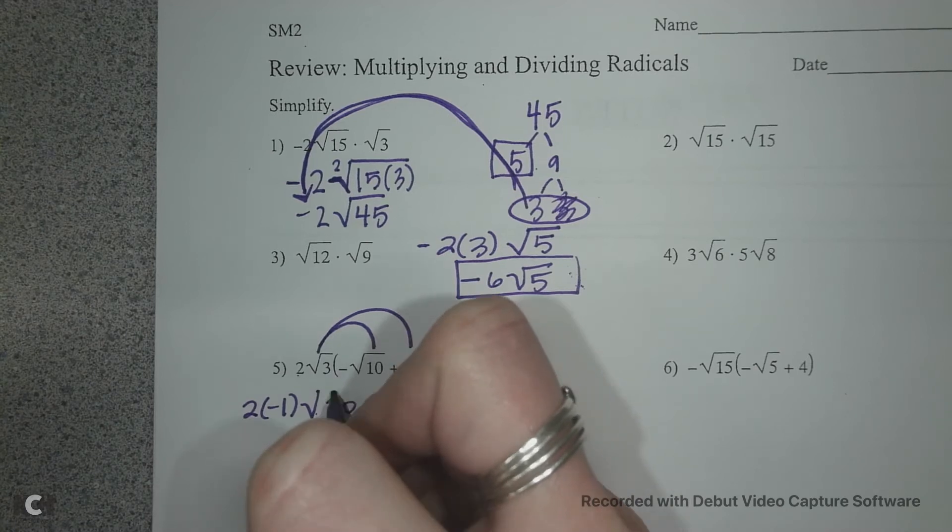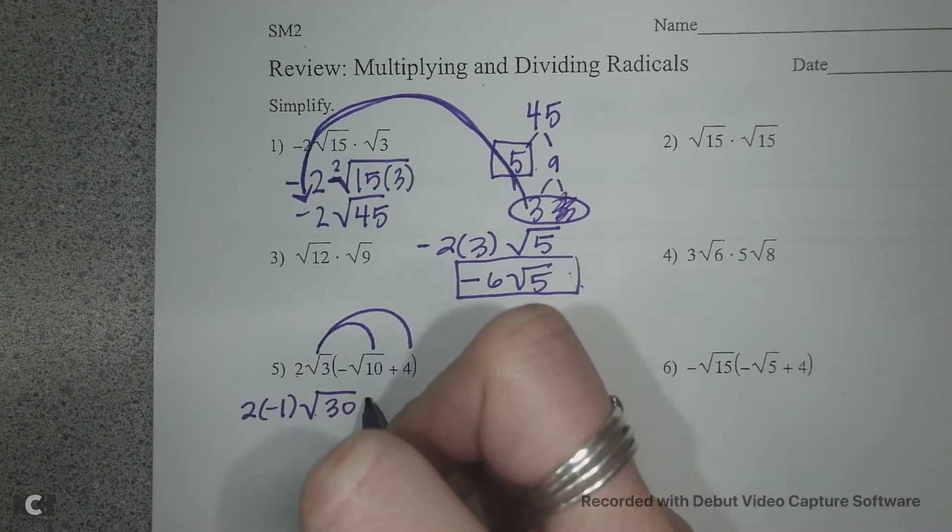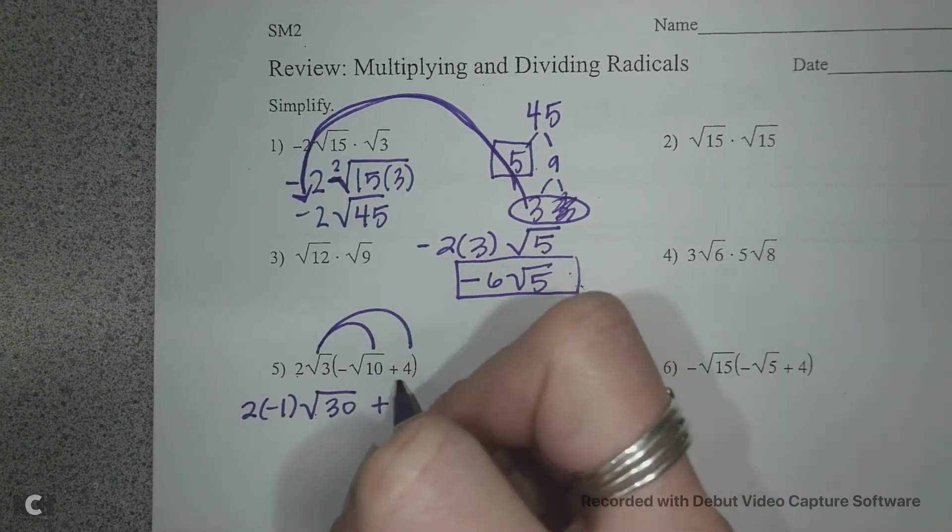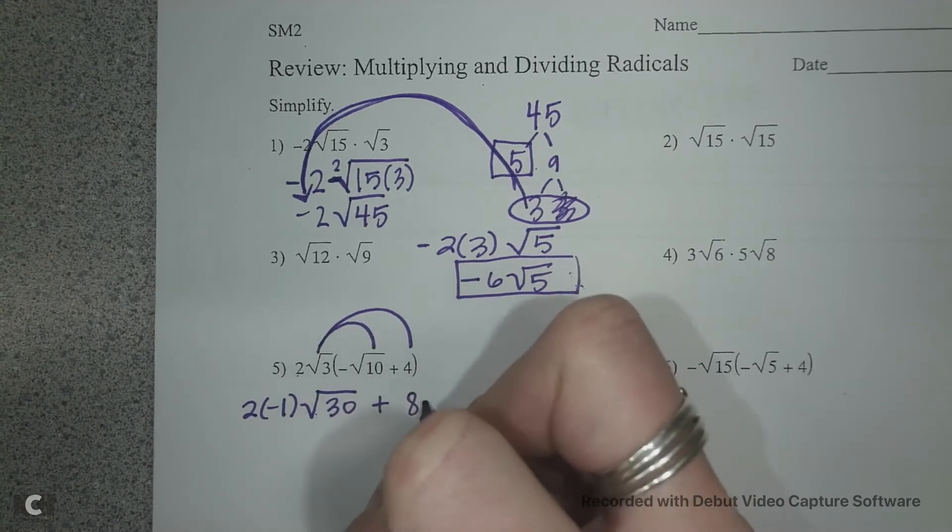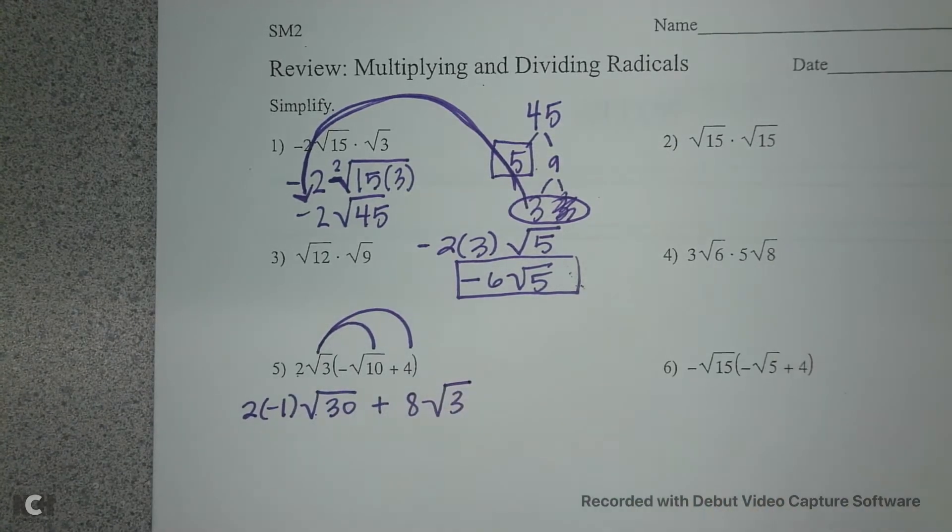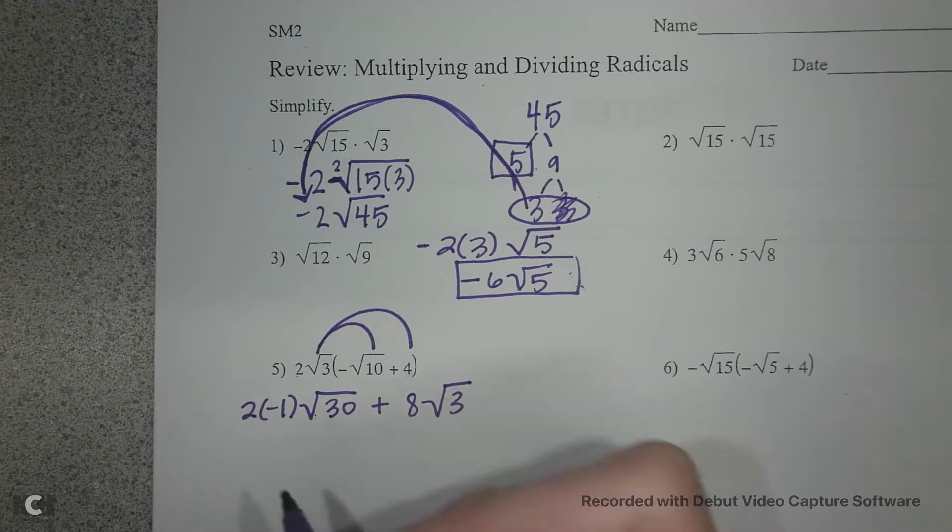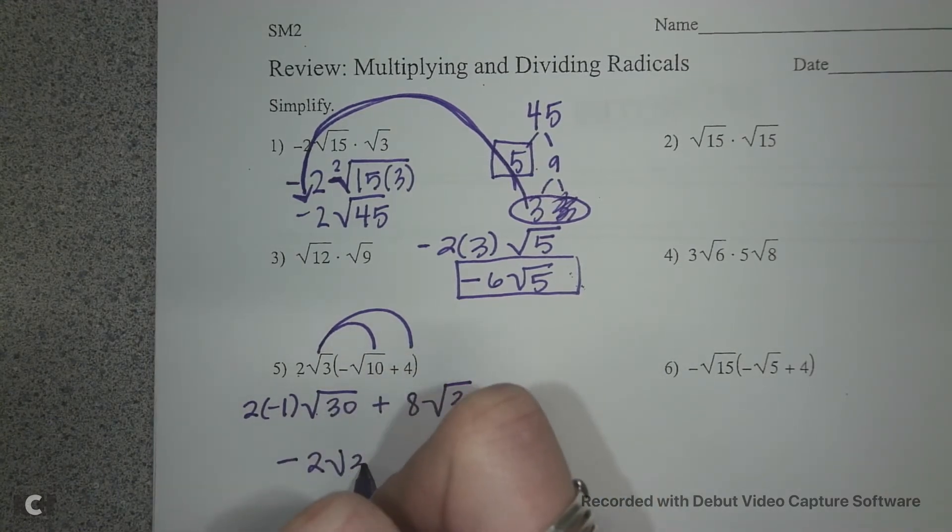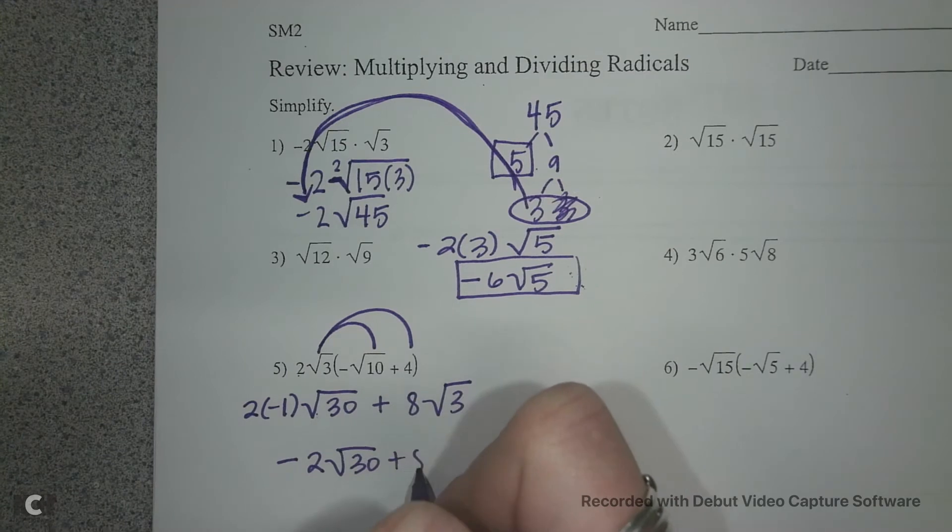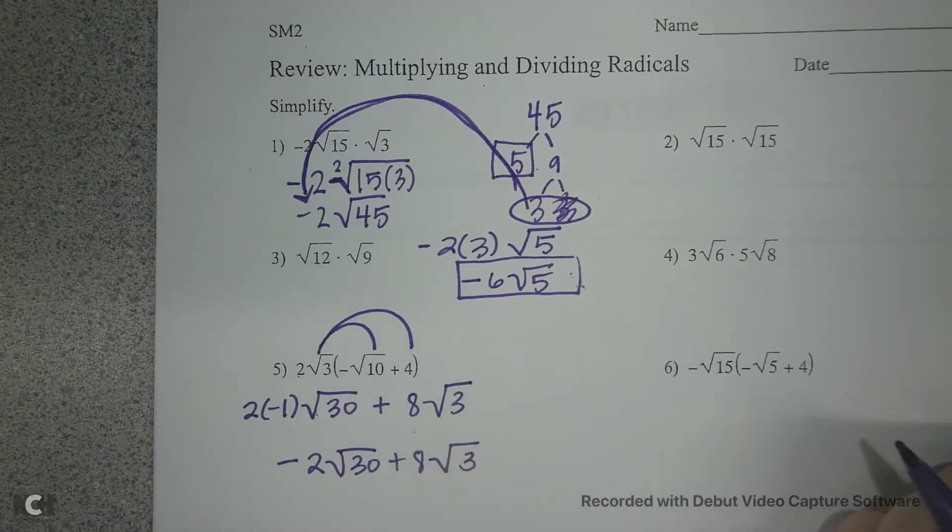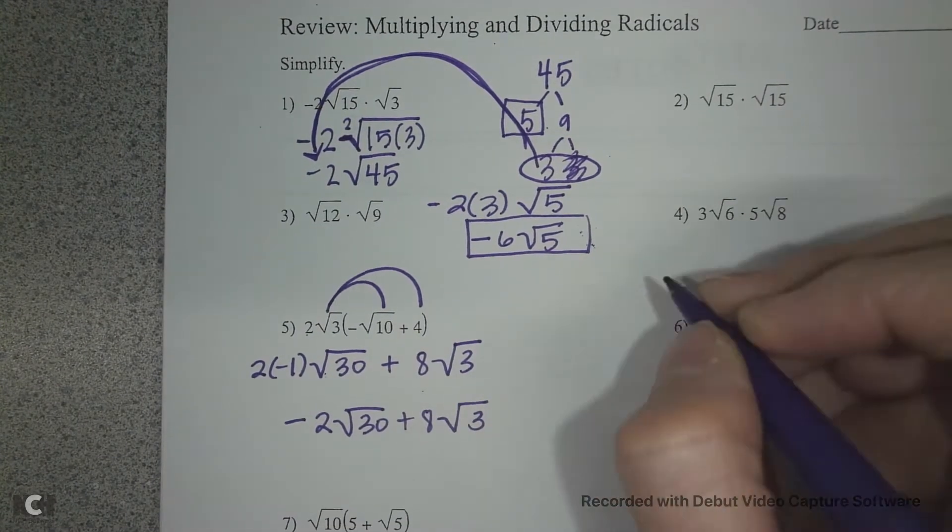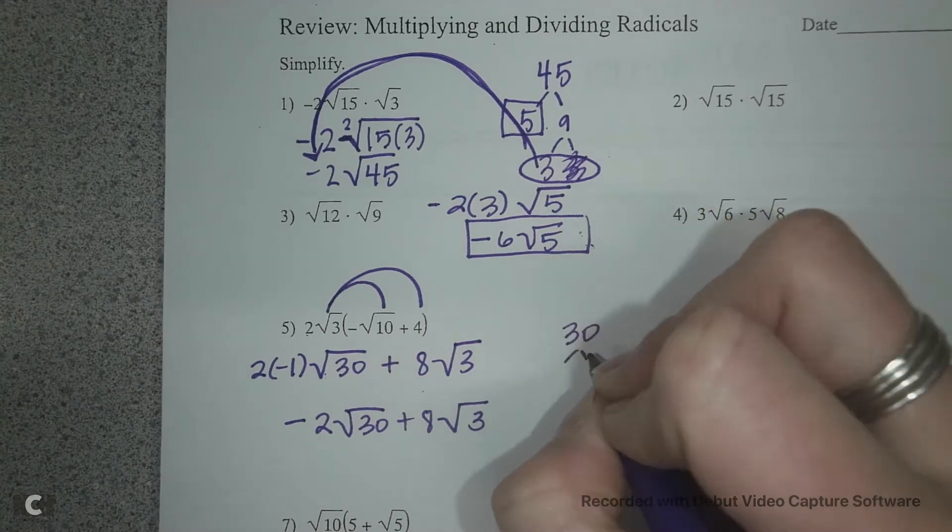Then under my radicals we multiply those numbers, so 3 times 10 is 30. And we multiply our leading coefficients 2 times 4 is 8, and then we multiply our radicals as well. 2 times negative 1 is negative 2 root 30, and we have 8 root 3.